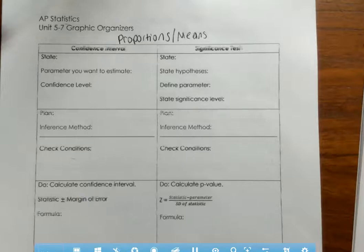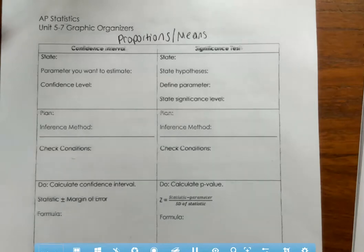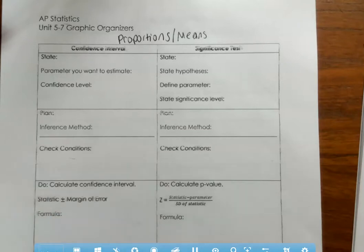All right, AP Stats, here is your last set of notes before the AP exam. So these are three whole units — units five through seven. Ms. King already covered unit five, so I have six and seven to cover the graphic organizer for. It's a lot of information, and I'm going to explain how we have everything set up so you'll be able to use it quickly during the AP exam.